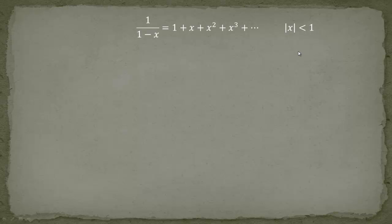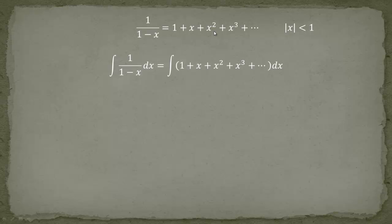What we are doing is simply integrating both sides. If you integrate 1 over (1 minus X), you get minus the logarithm of (1 minus X), and on the right-hand side we integrate the polynomial. The big question is: are we allowed to integrate term by term? The answer is yes, because this series converges uniformly, which allows us to interchange integration and summation.